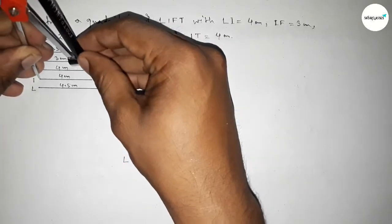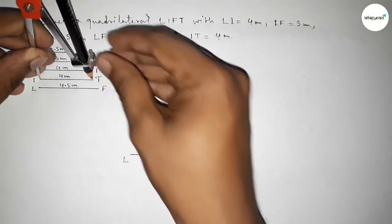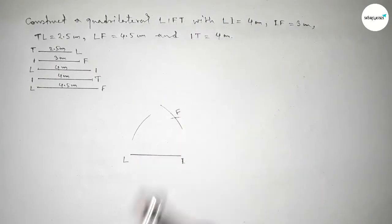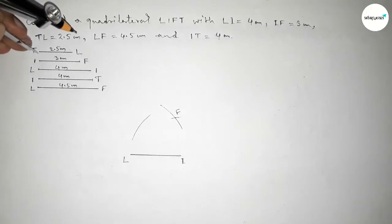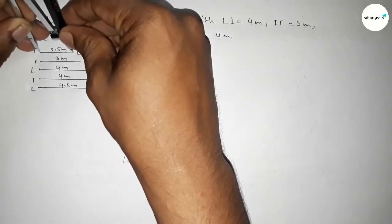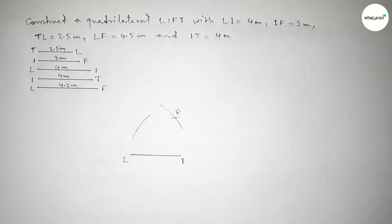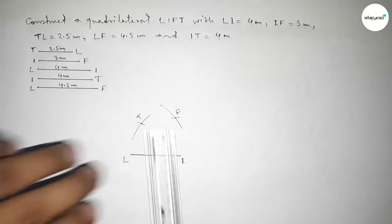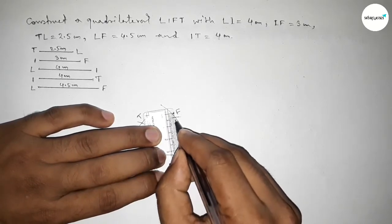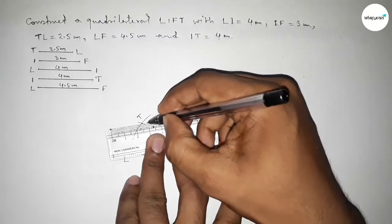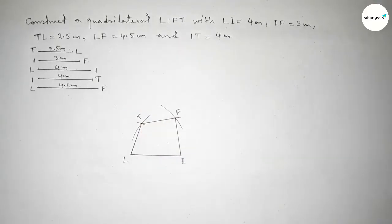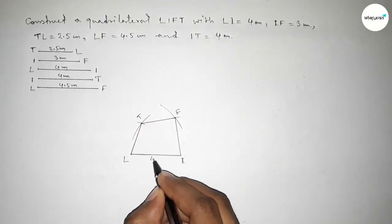Taking the length IT equal to 4 centimeter by using compass and putting the compass on the point I and drawing here an arc. Next taking the length TL equal to 2.5 centimeter and putting the compass on the point L and cutting here. So both the curves intersect at a point T. Now joining IF first, then joining FT, then joining LT.